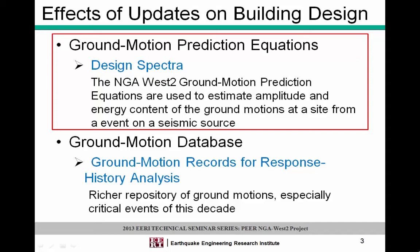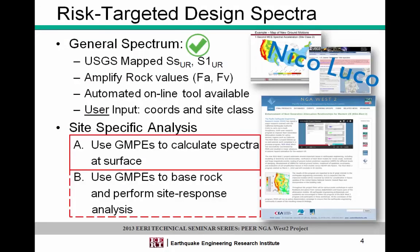First, we're going to look at the ground motion prediction equations and how we calculate the design spectra from them. Nico has gone through the process today, showing it for the general spectrum and the map spectra. I'm going to take that and follow it with what you would do in a site-specific analysis, where you actually calculate the spectral values at the surface rather than just applying the Vs30 factors to a reference site class BC.